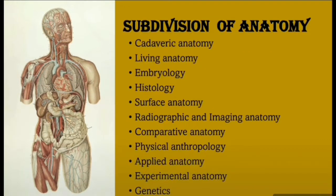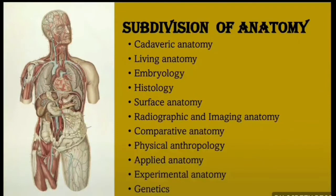The various subdivisions of anatomy are: cadaveric anatomy, living anatomy, embryology, histology, surface anatomy, radiographic and imaging anatomy, comparative anatomy, physical anthropology, applied anatomy, experimental anatomy, and genetics. We'll go through each subdivision, starting from cadaveric anatomy and ending with genetics.